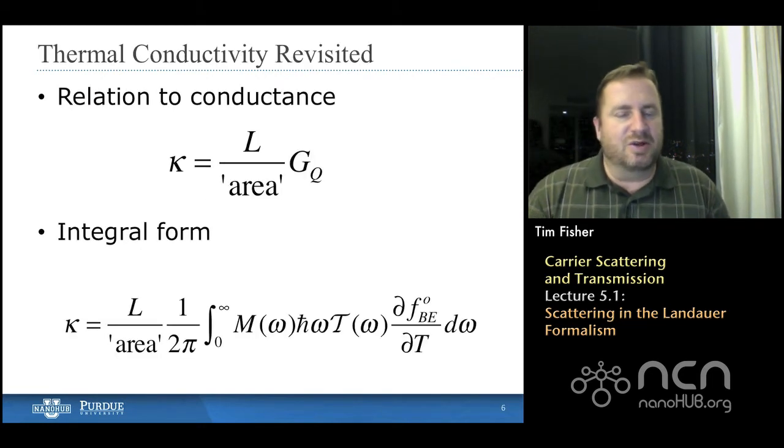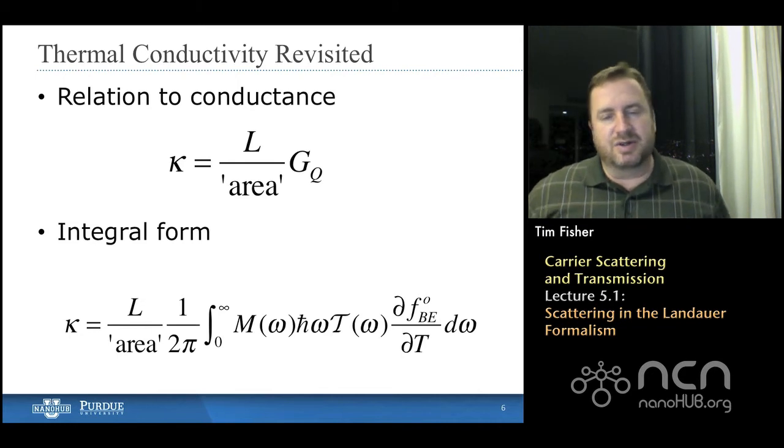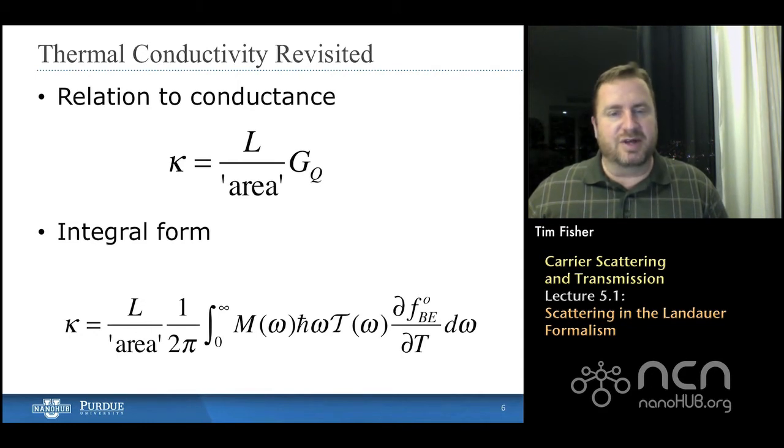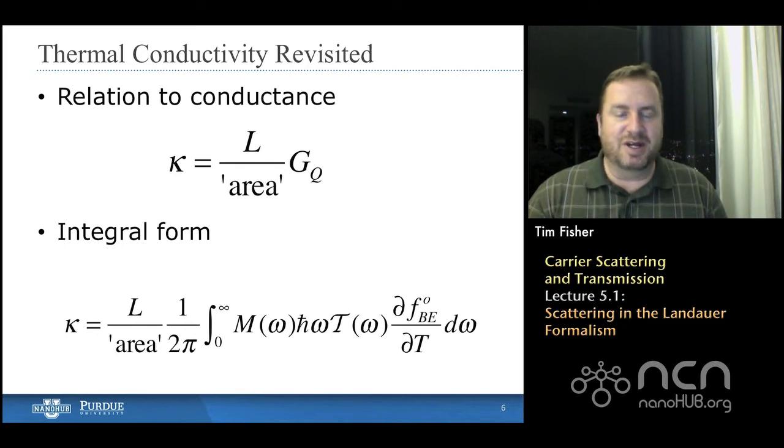So let's take a look now at the consequences for thermal conductivity. Thermal conductivity is related to thermal conductance in the way that's shown in the top equation here. It's basically the thermal conductance normalized by some geometric factors. So that's the length, that's the length in the direction of the transport, divided by area. And I put single quotes around area.